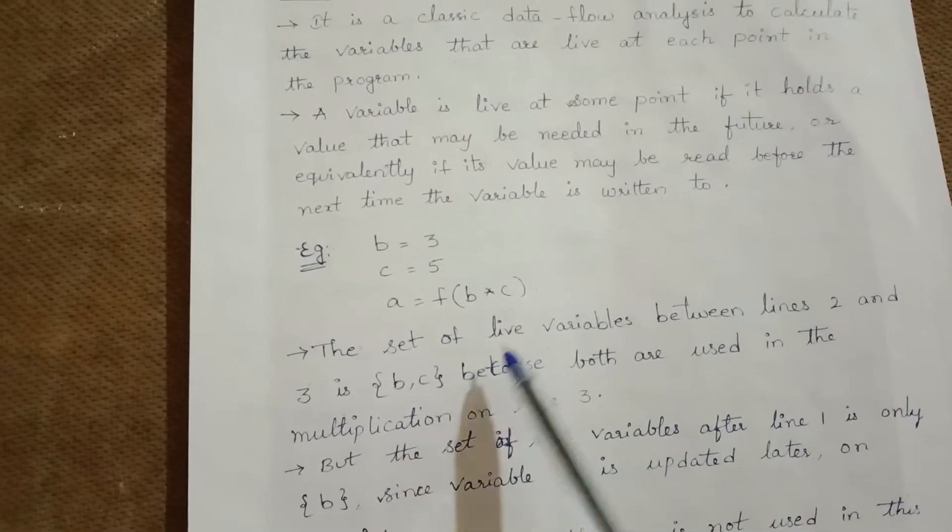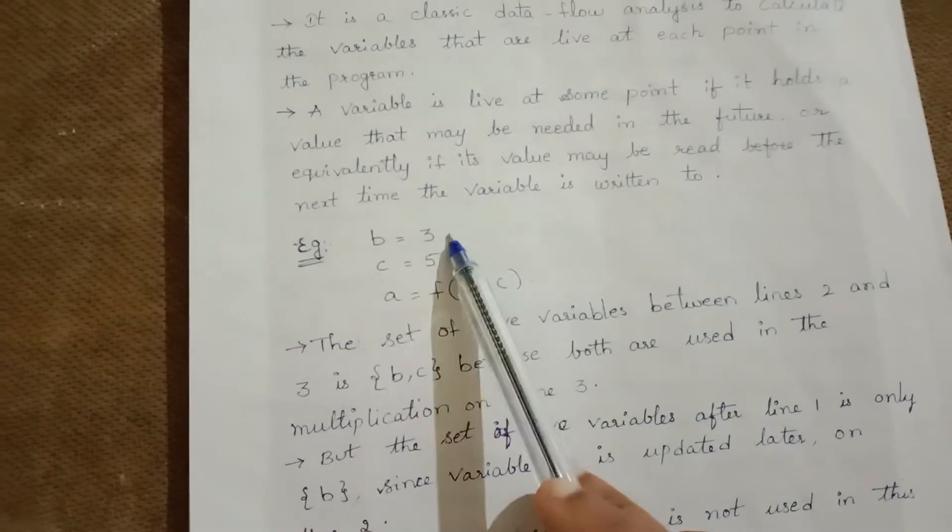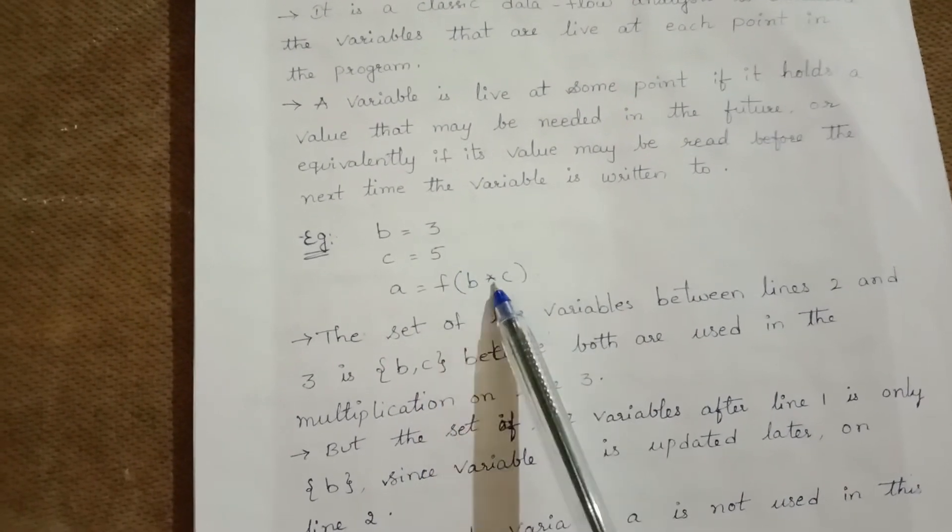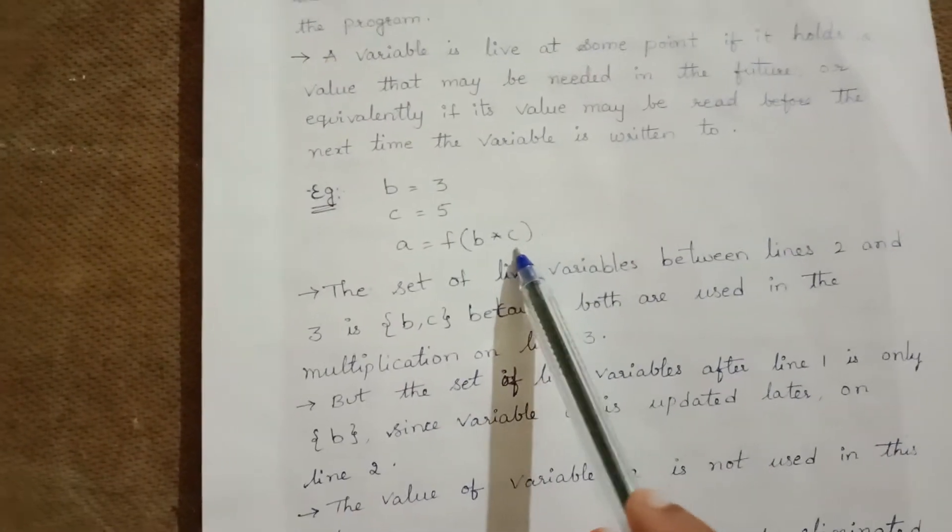But the set of live variables after line 1 is only b, since variable c is updated later in line 2.